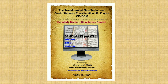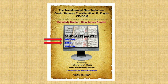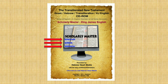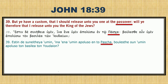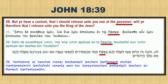Let me show you something. This is from Danny Ben-Gigi's Scholarly Master software. It has English, Greek, and Hebrew all in one — you can read them together. Now I want you to see this. This is John 18:39: 'You have a custom that I should release to you one at the Passover.' Here it is in the Greek — transliterated and in Greek — it's called Pascha. You can see the Pascha right here. That's Pascha. Pascha is translated as Passover, and it comes from the Hebrew word Pesach — the Peh, the Samech, and the Chet.